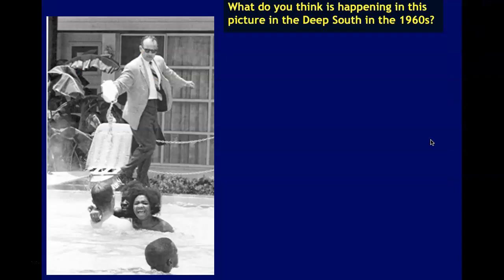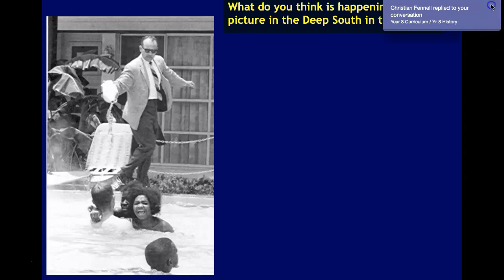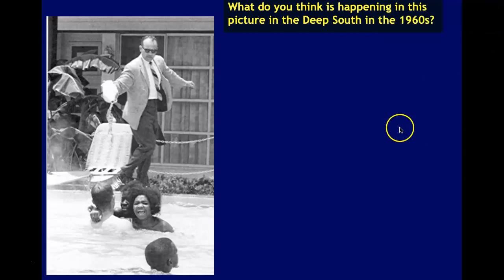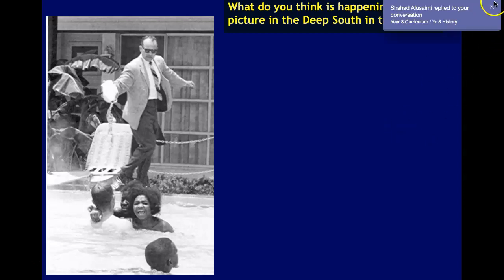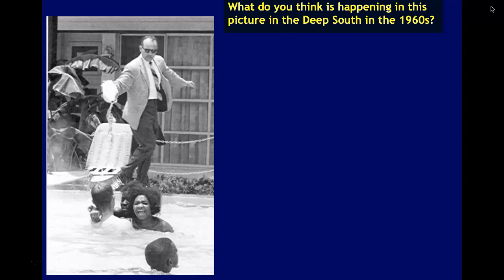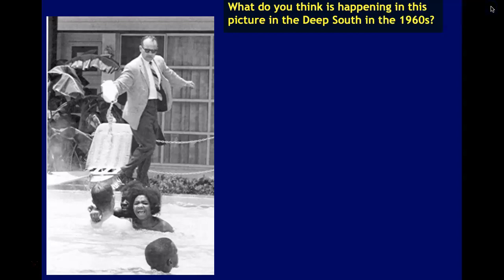Now I want you to have a look at this image. This is an image from the deep south in the 1960s. Have a look at it and see what you think is going on. It must be some sort of protest, or it could be. Write a couple of sentences explaining what you think is happening in this image. Pause the video and answer the question.